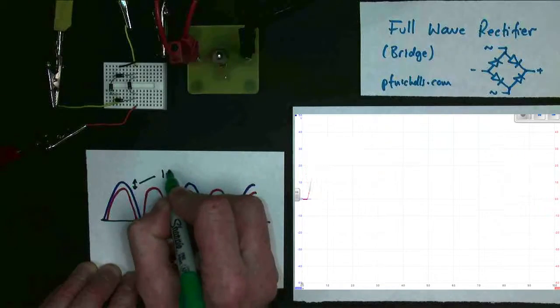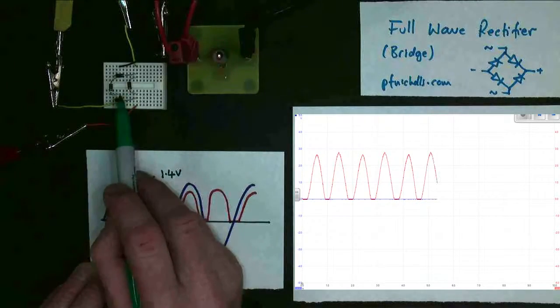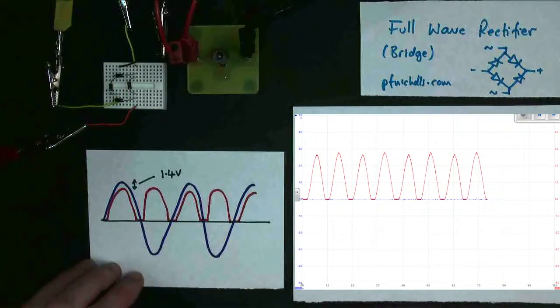But you'll notice I still have a small gap, or if I could show you I would, and that would now be 1.4 volts because I have four diodes here, and at any one point two of them are being used. We'll look at the regulator again in just a moment.